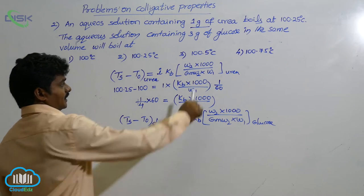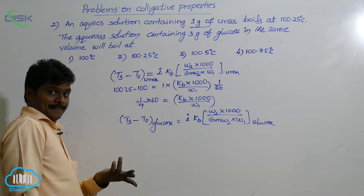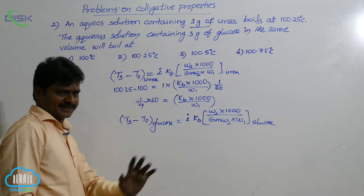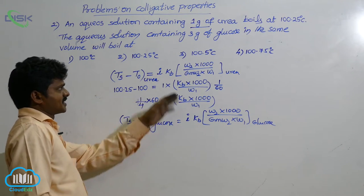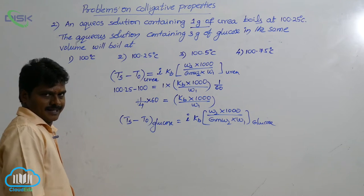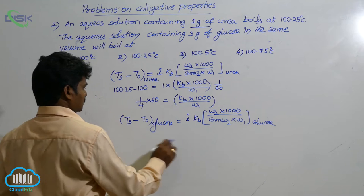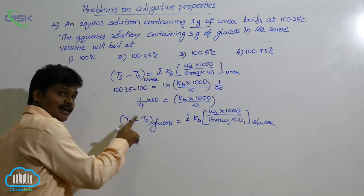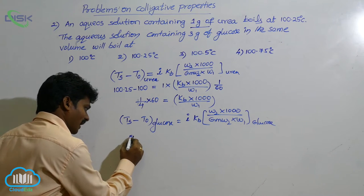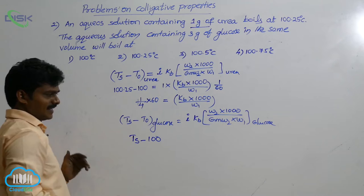So here in this solution and this solution, volume of solvent is fixed, that means weight is fixed. KB won't change because solvent is not changing. Both are aqueous solutions. KB depends only on solvent. Next, so here Ts we know, T naught we know is 100. Ts to be found out. Ts minus this is 100, T naught is 100.